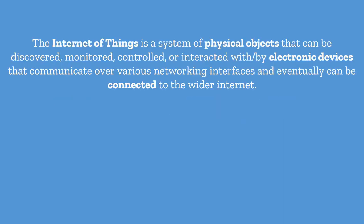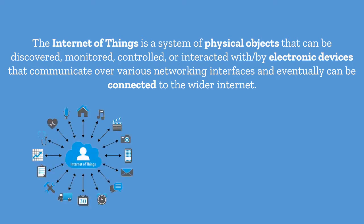What is Internet of Things? The Internet of Things is a system of physical objects — it can be your car, your home, a water kettle, or your electric fan — that can be discovered, monitored, controlled, or interacted with by electronic devices. You can use your smartphone to control some devices, or write a program to make devices communicate over various networking interfaces like Bluetooth, Wi-Fi, or Zigbee, and eventually connect to the wider internet.